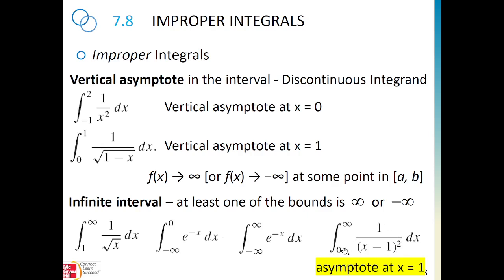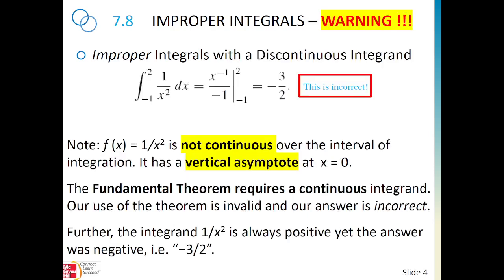A combined case is the integral from 0 to ∞ of 1/(x-1)². We see infinity as one bound, making it improper. Additionally, the function has a problem at x = 1 — a vertical asymptote — so this integral is improper for two reasons: the infinite upper bound and the vertical asymptote inside the interval of integration.